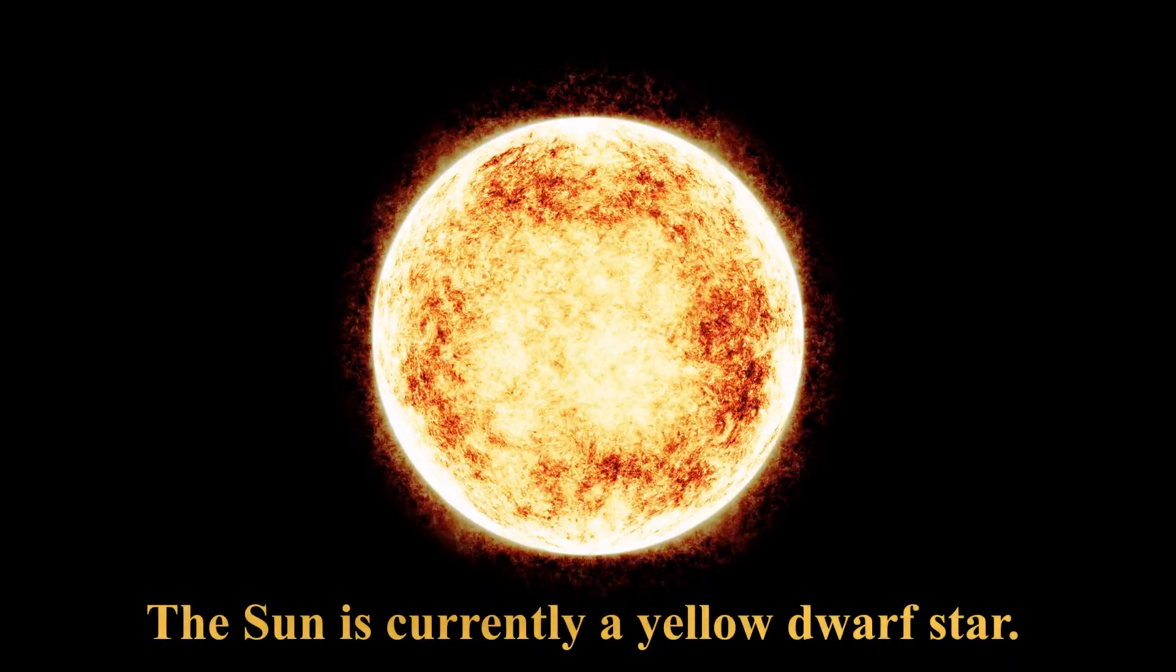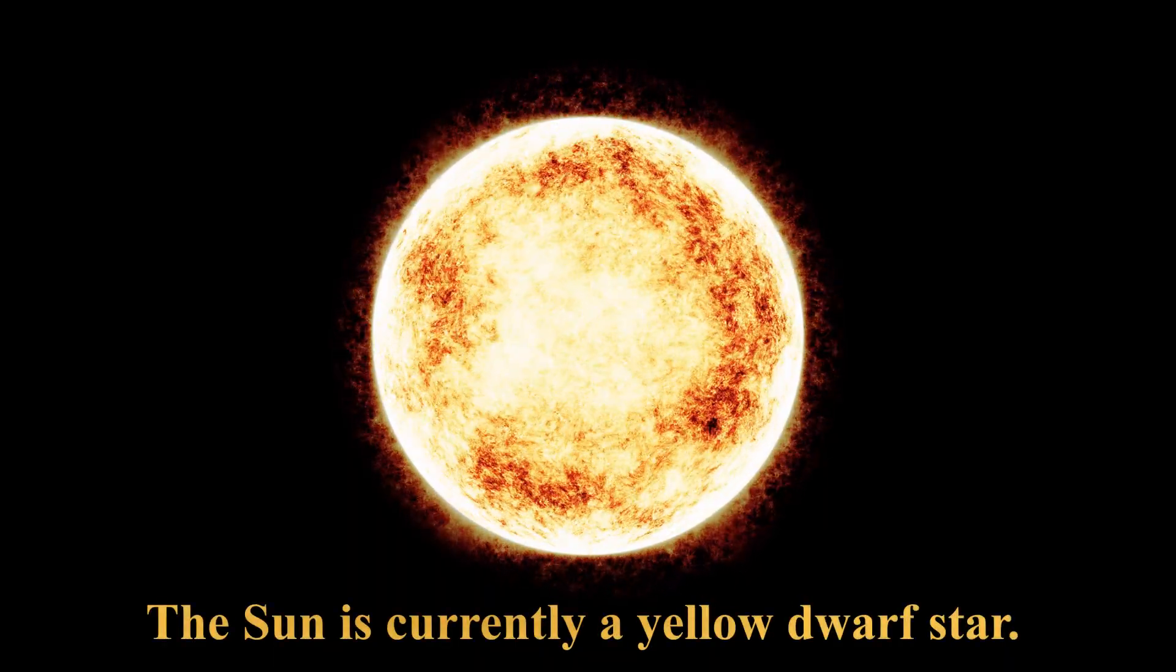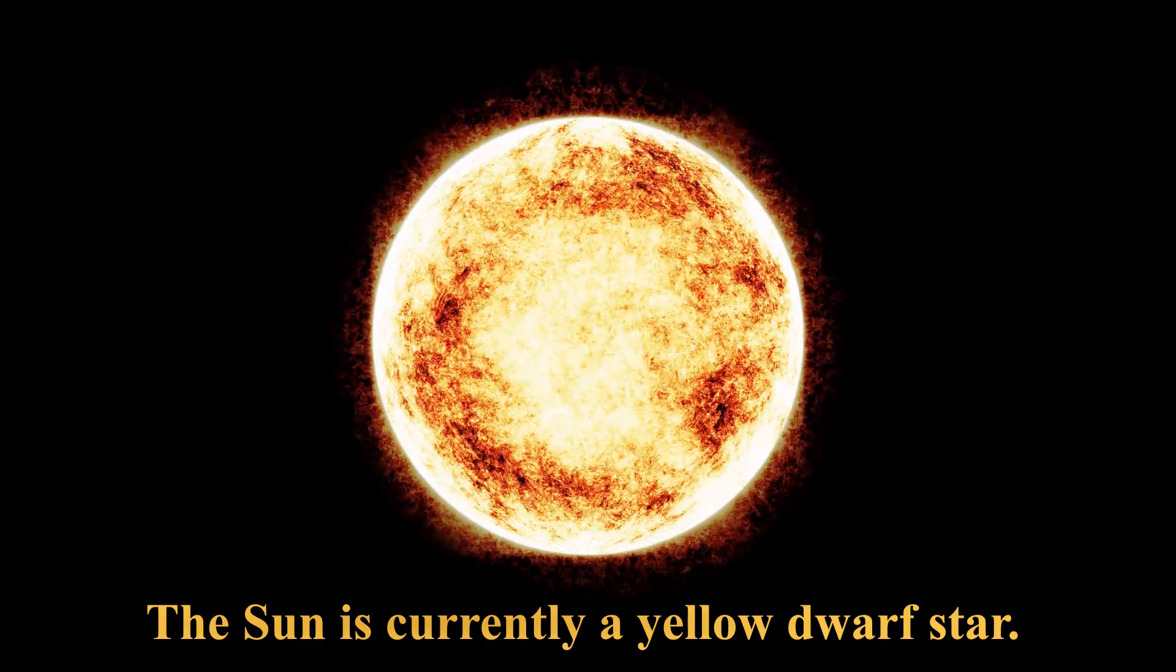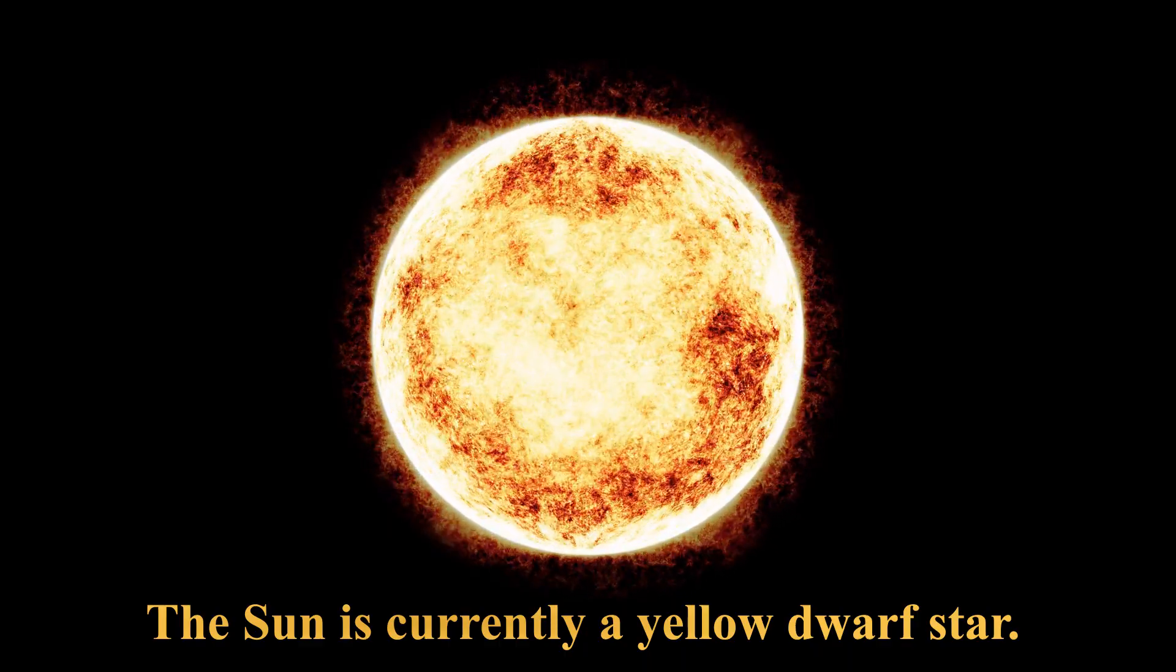The Sun is currently a yellow dwarf star. Towards the end of its life it will become a red giant and then a white dwarf.